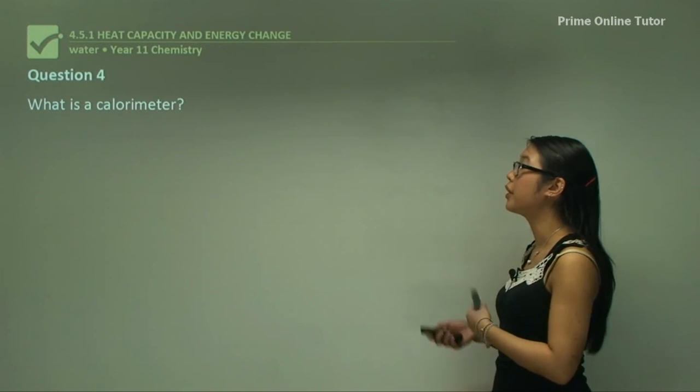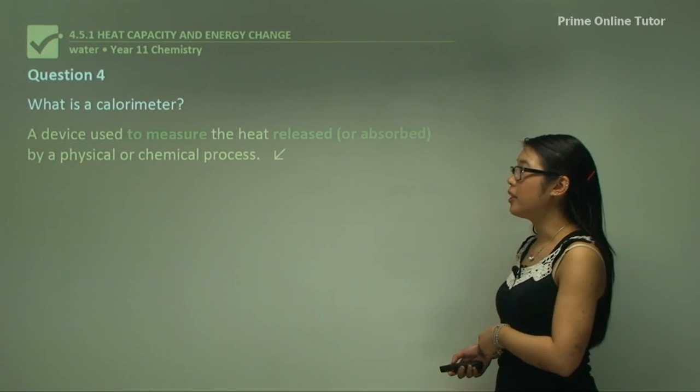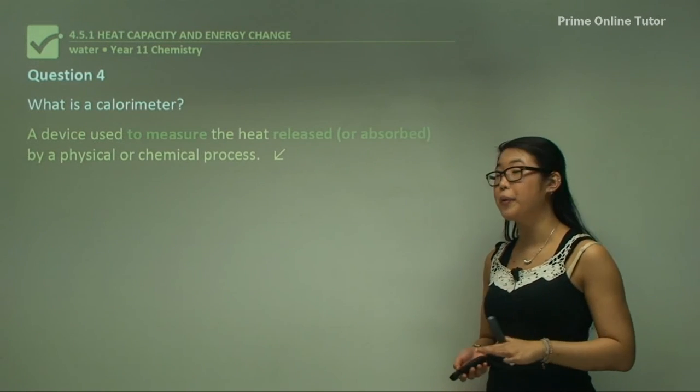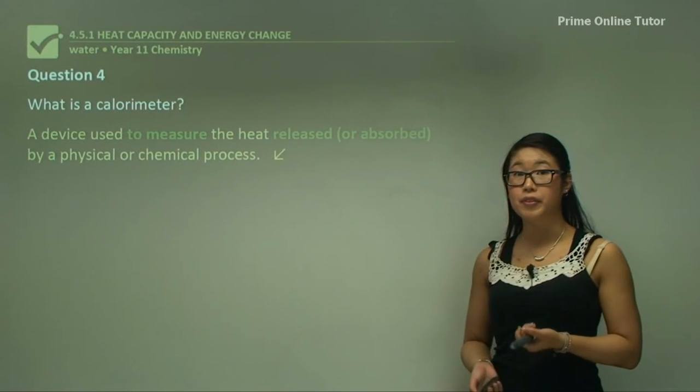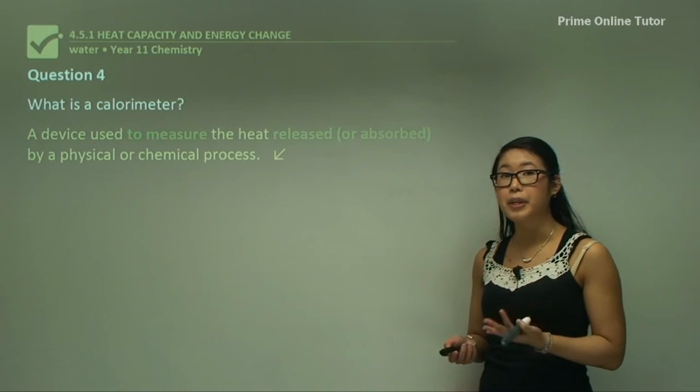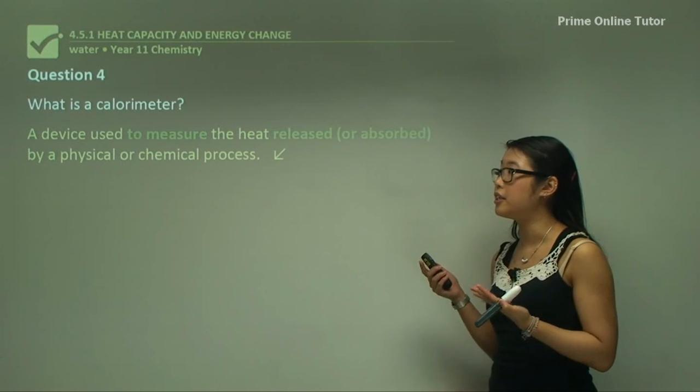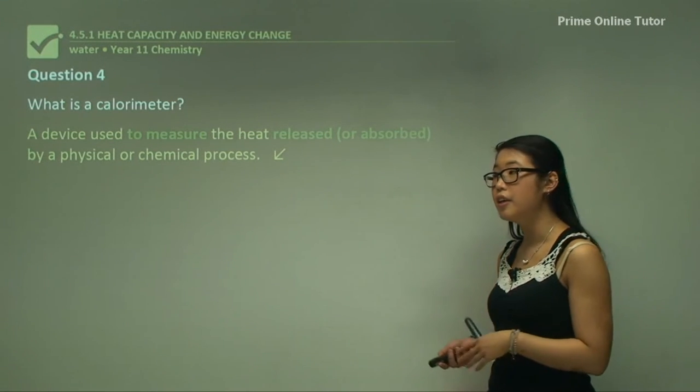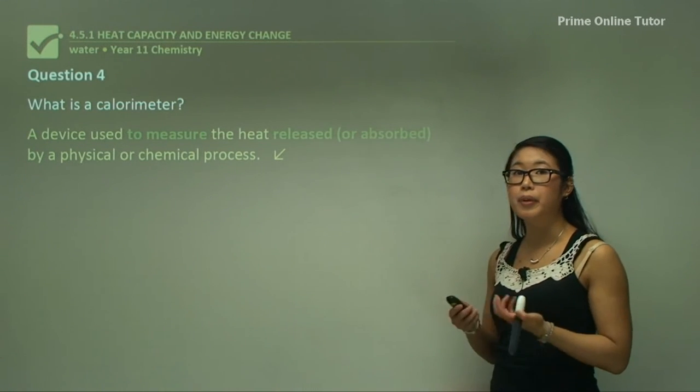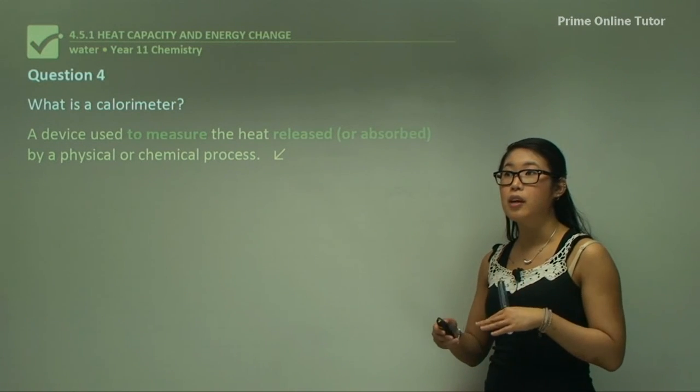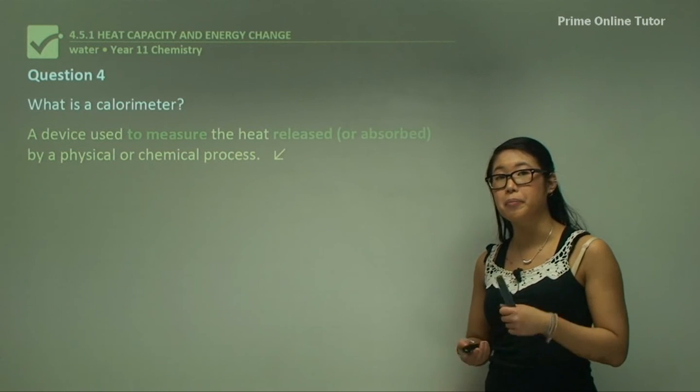Question four: what is a calorimeter? Remember it was that styrofoam cup. It's a device used to measure the heat released or absorbed by a physical or chemical process. You need to make sure this device is heat insulated. That's why we're using polystyrene cups because they keep the heat energy in so we're not losing it to the environment and we can measure the changes.